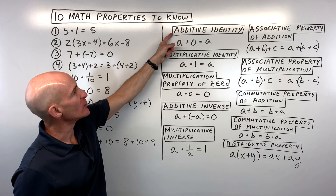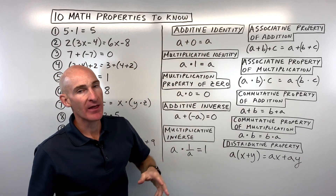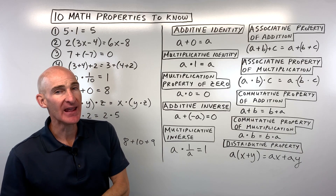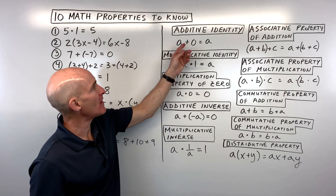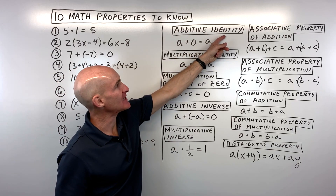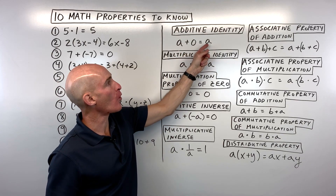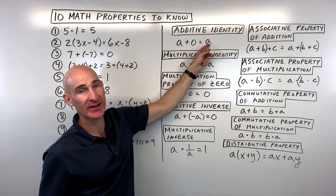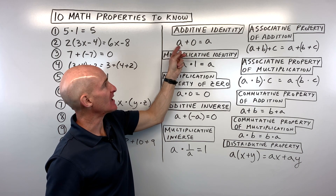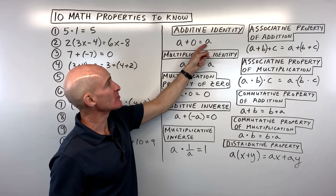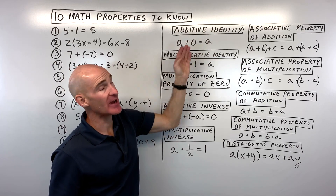These properties are super important to know by name. When you look closely at the name, it sort of tells you what it is. For the additive identity, 'identity' means you get the identical quantity back. So when you add zero to any number — say a is a number — a plus zero is equal to a. That's the additive identity.